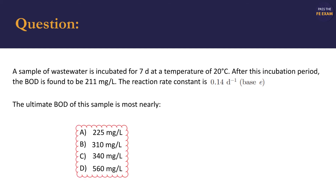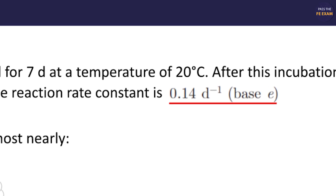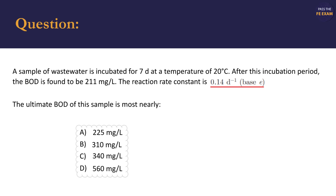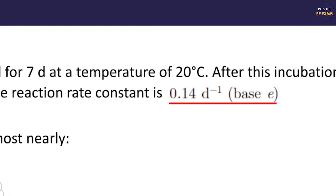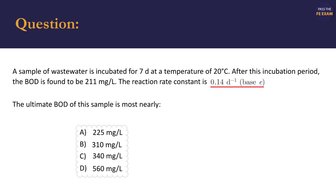Before we look at the solution for calculating the ultimate BOD, we should note two things. First, we're given the reaction rate constant — we won't need to calculate it for this problem. The second is that the reaction rate constant is given in base E, which, when we look at the equation in a moment, will be denoted by lowercase k. Your textbook may have presented rate constants as lowercase k and uppercase K.